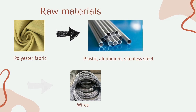For raw materials, umbrellas are usually made from stretchable fabrics and other materials used for the skeleton and the winding press. The raw materials for polyester are polyethylene terephthalate, dimethyl terephthalate, and ethylene glycol. The skeleton is made from plastic, aluminium, and stainless steel.